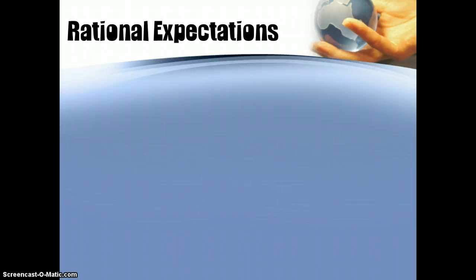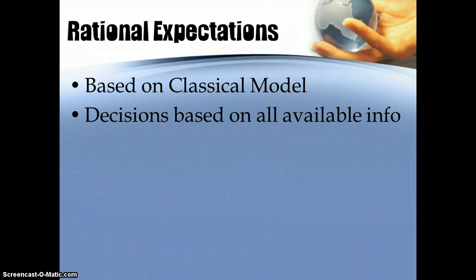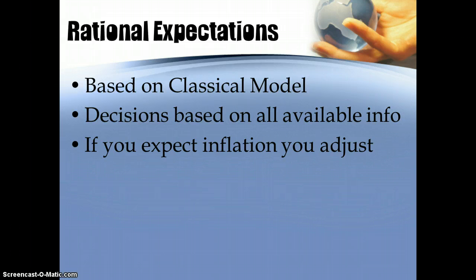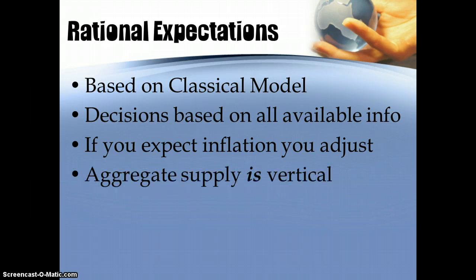A third theory is rational expectations, which is kind of a replay of classical theory. The argument is that people will make decisions based on available information and what they think the economy will do. So if you think the economy is going to inflate, you're going to act as if it already has. This means there is no upward-sloping short-run aggregate supply curve — it would be a vertical line, because if I think there's going to be 2% inflation as an employer, I will adjust payrolls accordingly. Rational expectations theorists would say the economy self-adjusts immediately based on expectations, and so they look a lot like the classical model.